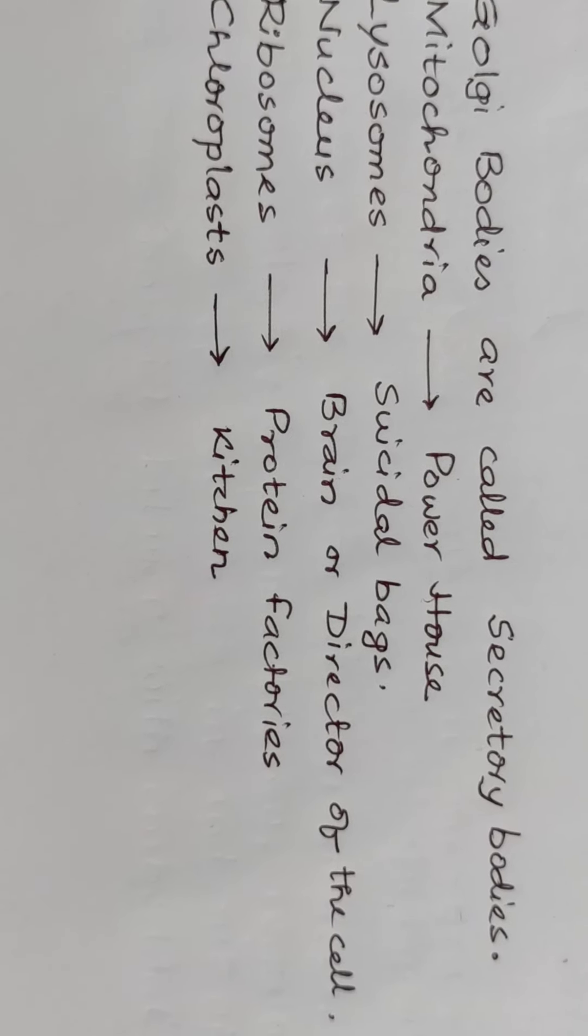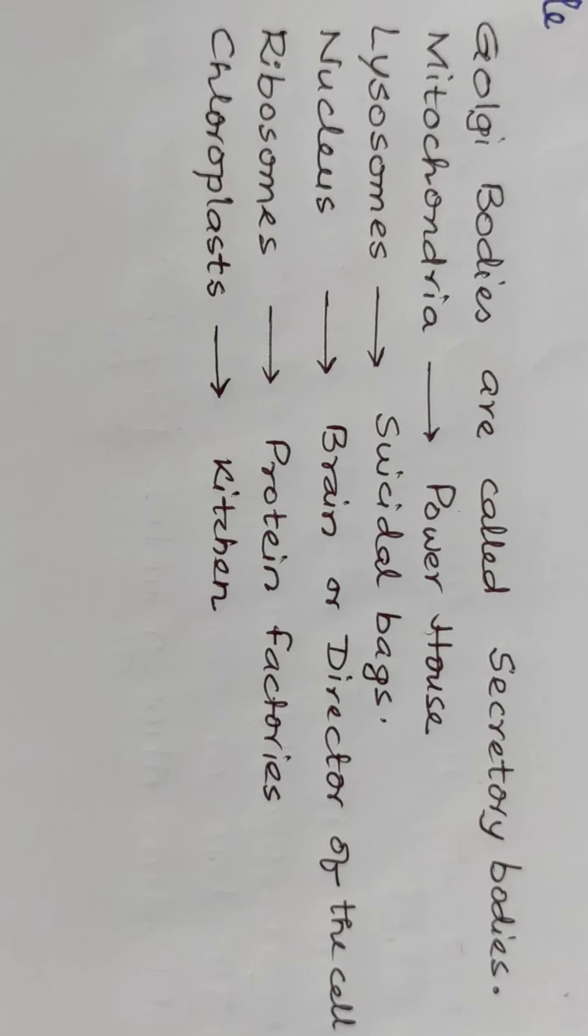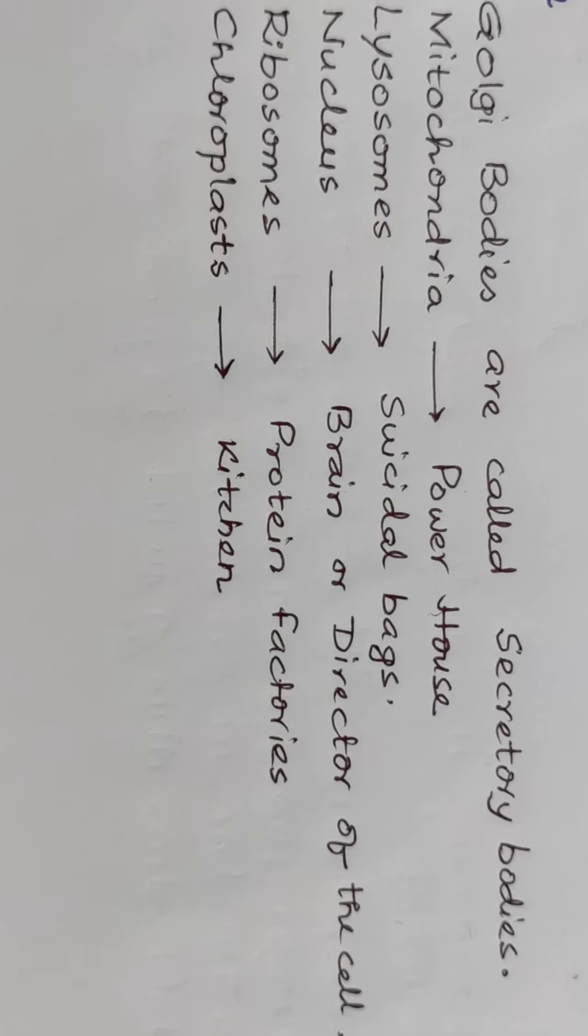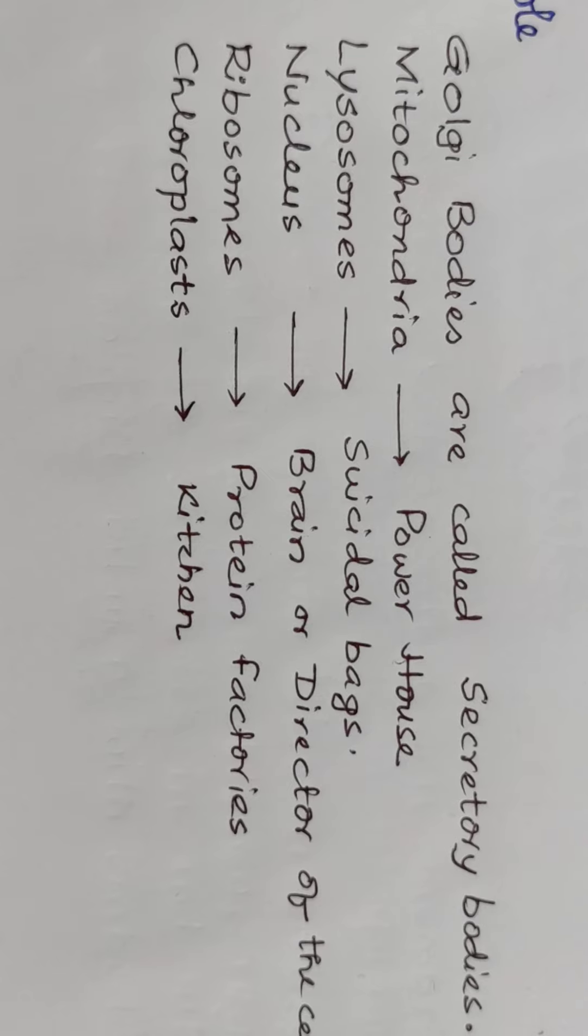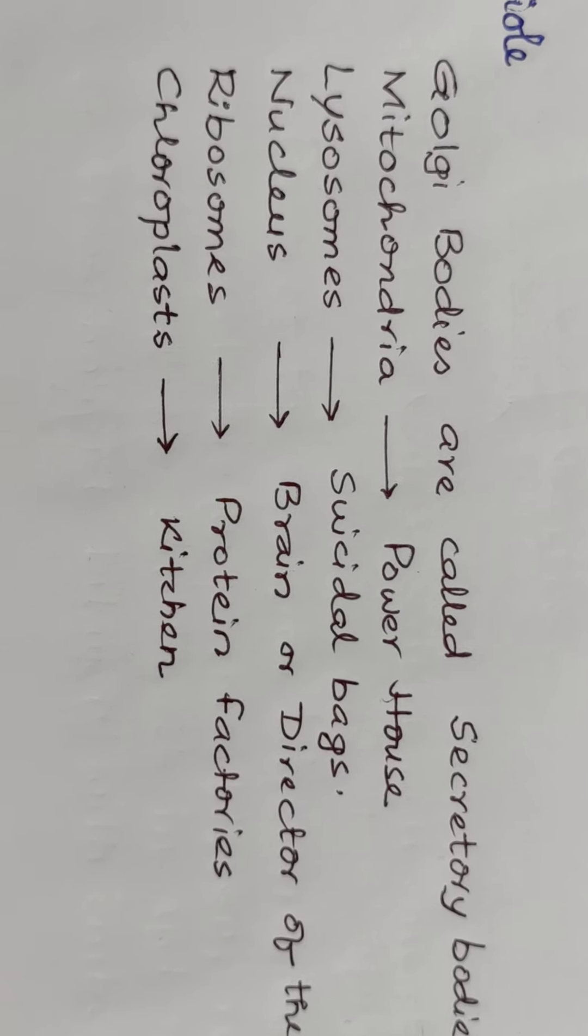Nucleus has a vital or pivotal role to play in a cell, so it is called brain or director of the cell. Ribosomes are called protein factories and chloroplasts are called kitchens of the cell.